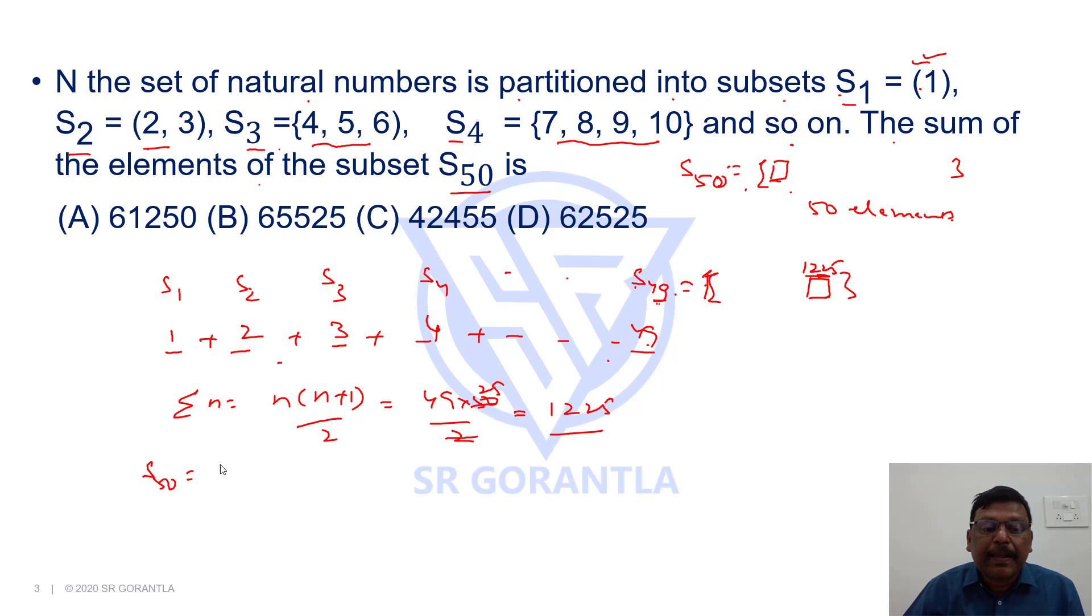If the last element of 49th subset is 1225, for S50 subset, the first element will be 1226, next 1227 and so on. We have to write 50 numbers, 50 elements. So it will end with 1275.